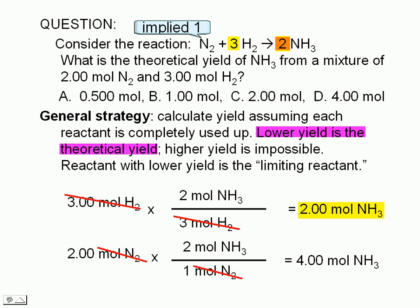The lower of the two yields is 2.00 mols. The correct answer is C. The theoretical yield of ammonia is 2.00 mols.